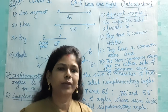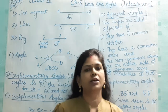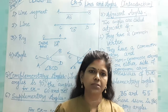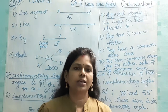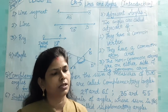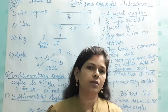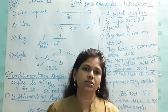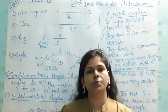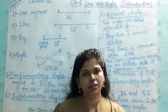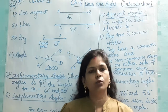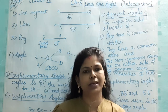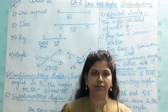Can two acute angles be complementary? Yes. Two acute angles can be complementary. Suppose 20° and 70° — both are acute and their sum is 90°, therefore two acute angles can be complementary. Can two obtuse angles be complementary? No, because even one obtuse angle is greater than 90°, so the sum of two obtuse angles cannot be 90°, and they cannot be complementary. Can two right angles be complementary? No, because one right angle is equal to 90°, so two right angles cannot be complementary.